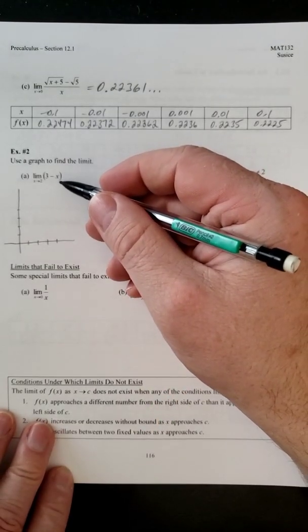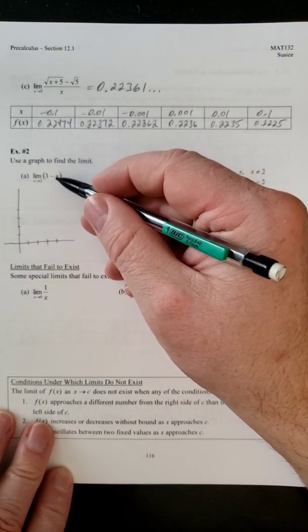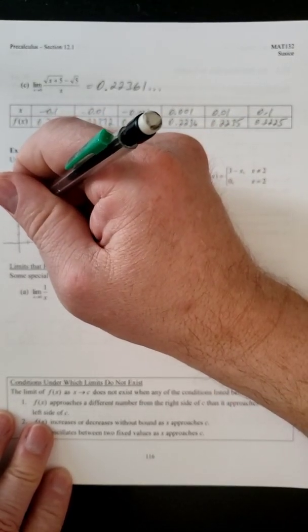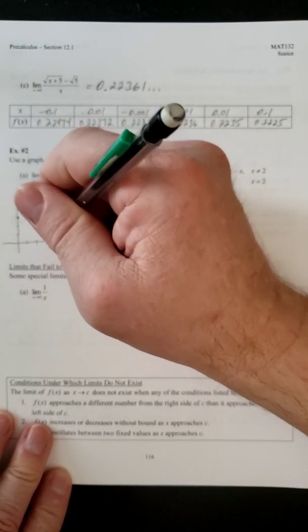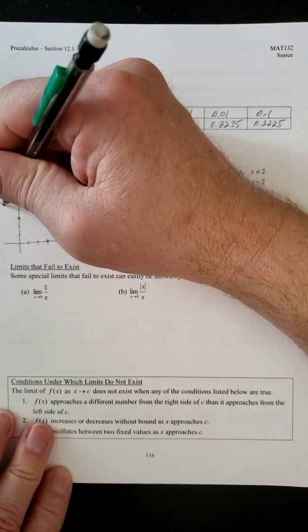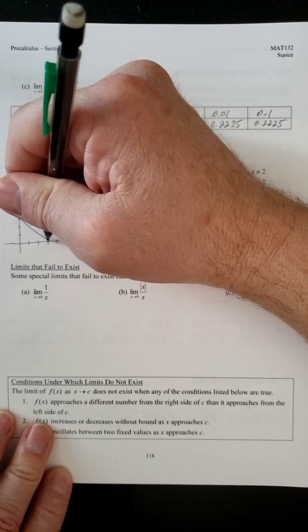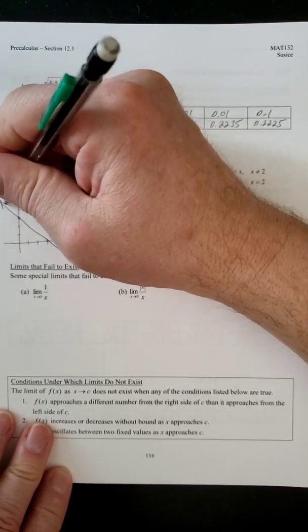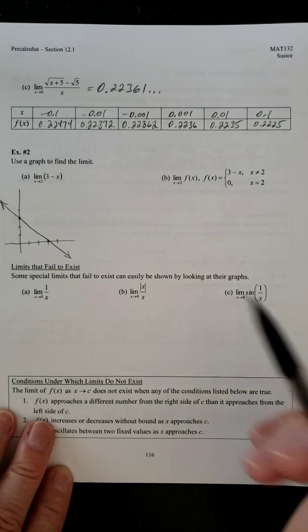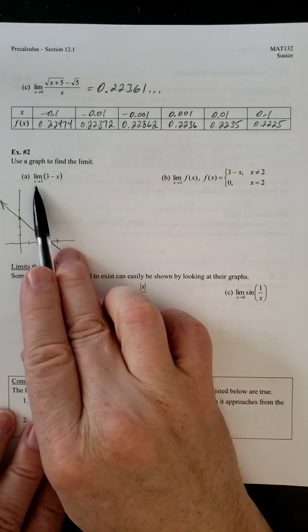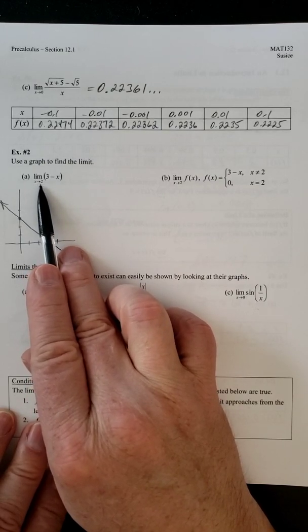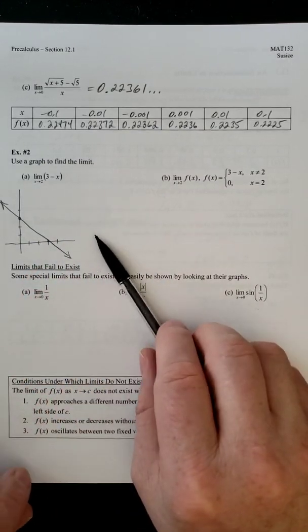So 3 minus x is a line. It's got a negative slope of 1 and a y-intercept of 3. So we should be able to sketch this pretty fast. So there's our graph. So now the question wants to know, what is y approaching as x approaches 2?